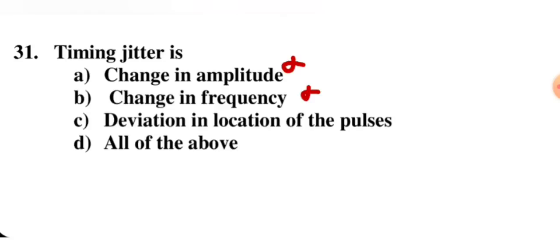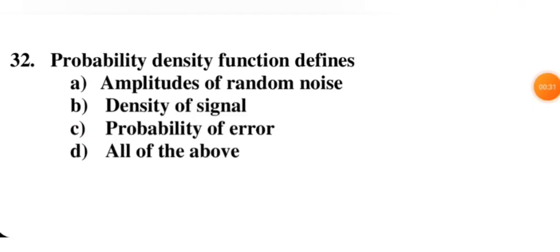Timing jitter is a change in amplitude? No. Change in frequency? No. Timing jitter is a deviation in the location of a pulse — so C is the correct option. Probability density functions define the amplitude of random noise — the correct option is A for this question.